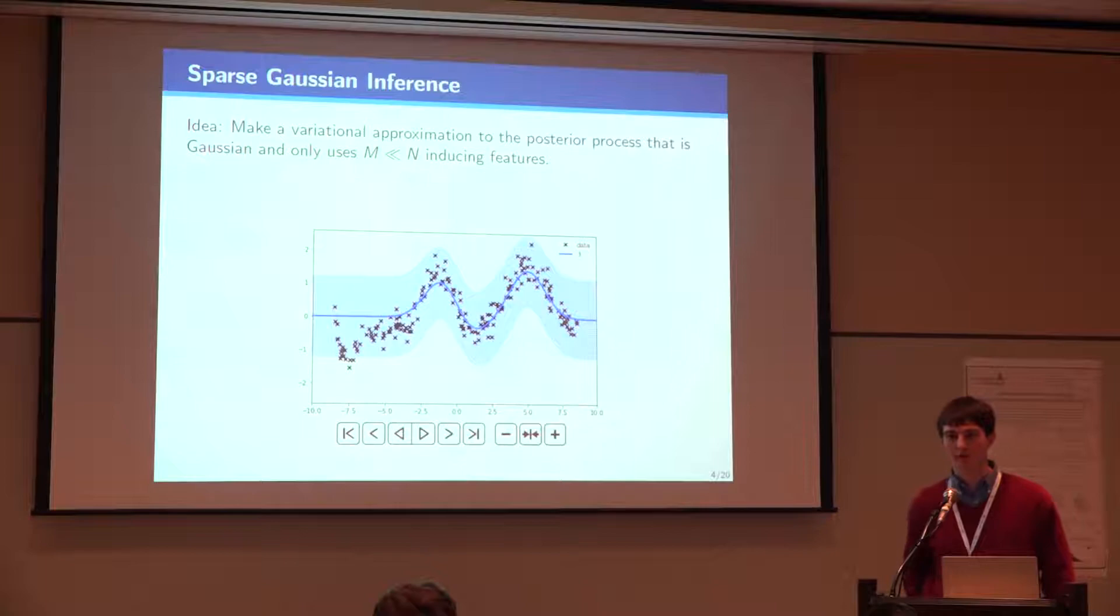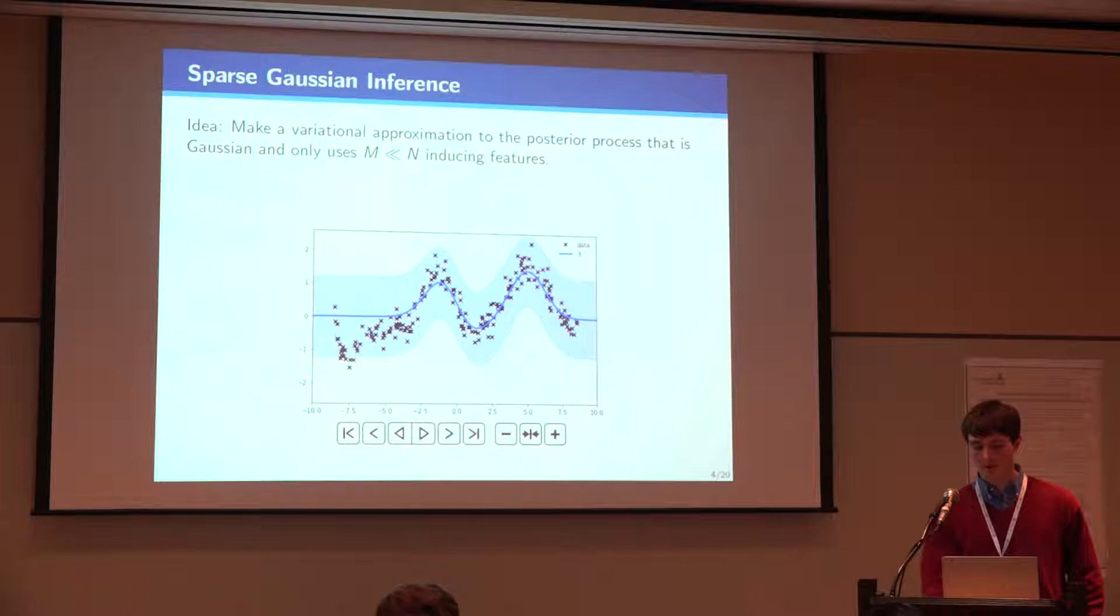The problem is it tends to scale cubically in the amount of data. So we can't really apply to large data sets. Commonly we do sparse variational inference. The idea here is that we let the posterior only depend on M inducing points usually. We'll use a slightly more general framework later. And as we increase M we have to do more computation, but we get a better approximation.